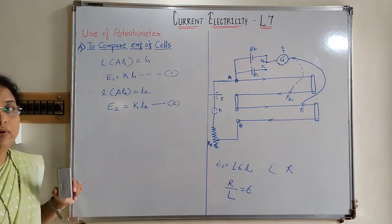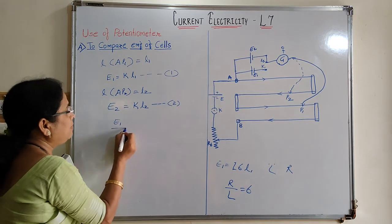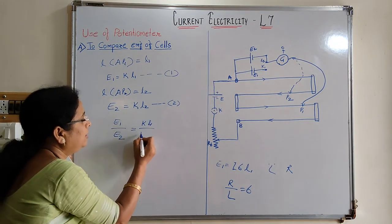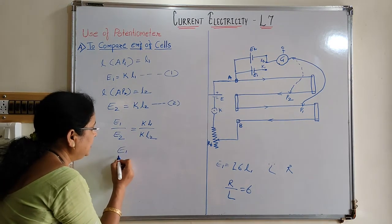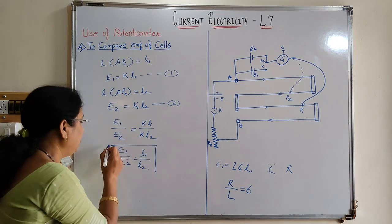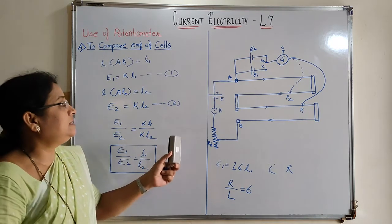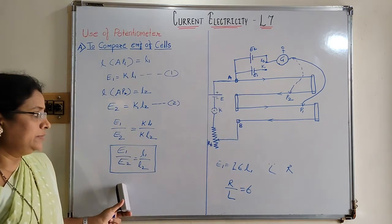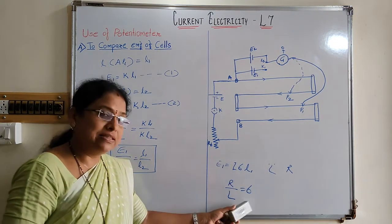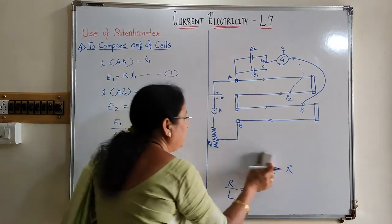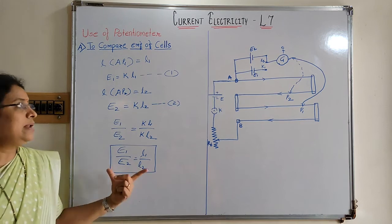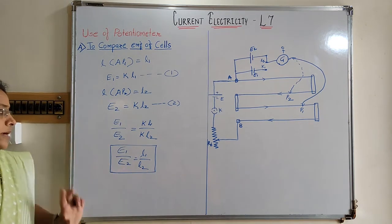Now we can compare the EMF of the two cells by taking the ratio E1/E2. E1/E2 = KL1 / KL2. K gets cancelled, so E1/E2 = L1/L2. That is the simple formula for the comparison of EMF of two cells by the separate method. If we use the formula E2 = IσL2, again Iσ cancels and we get E1/E2 = L1/L2. For a board theory question, draw the circuit diagram, write a simple theory using these formulas, and the final result is E1/E2 = L1/L2.